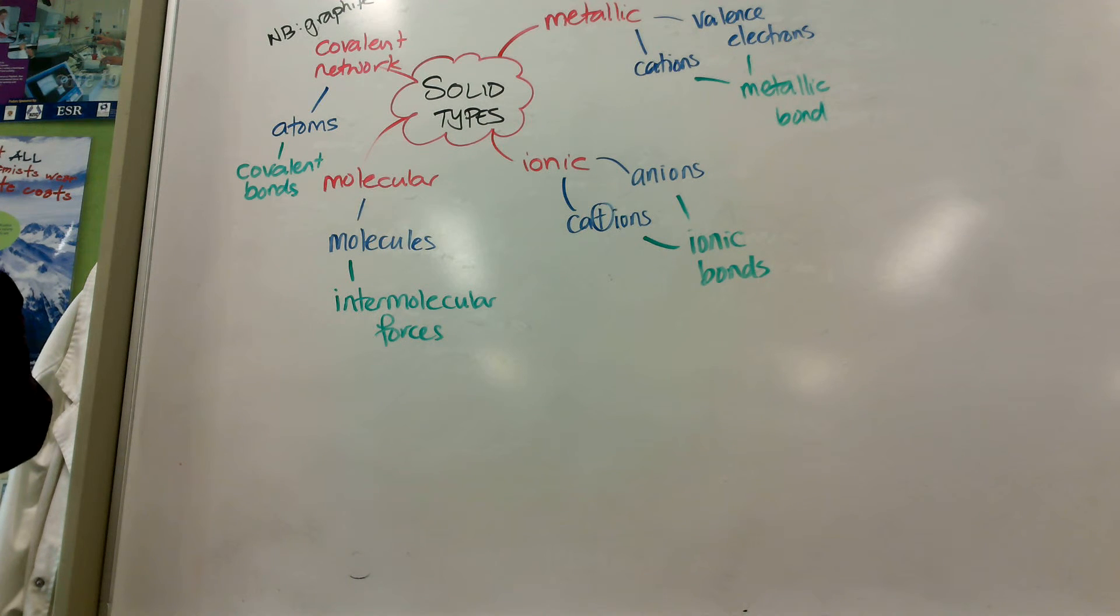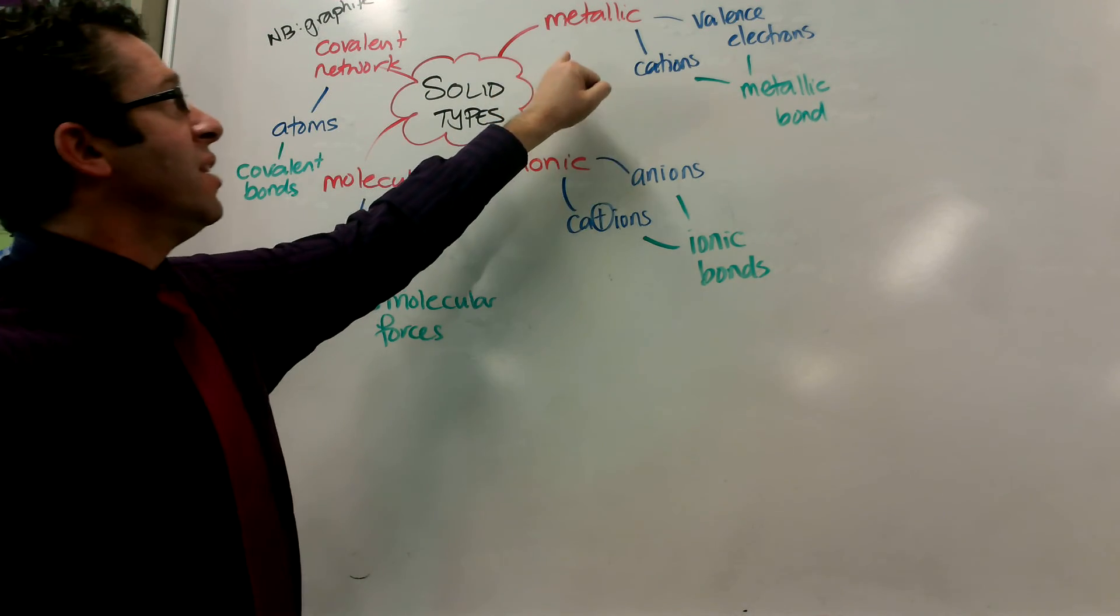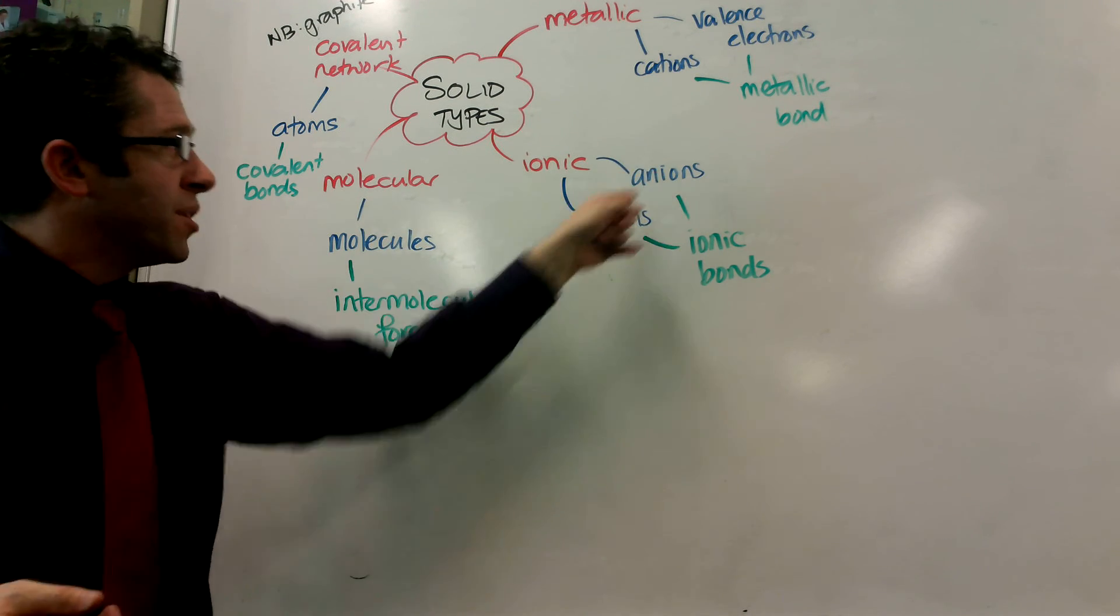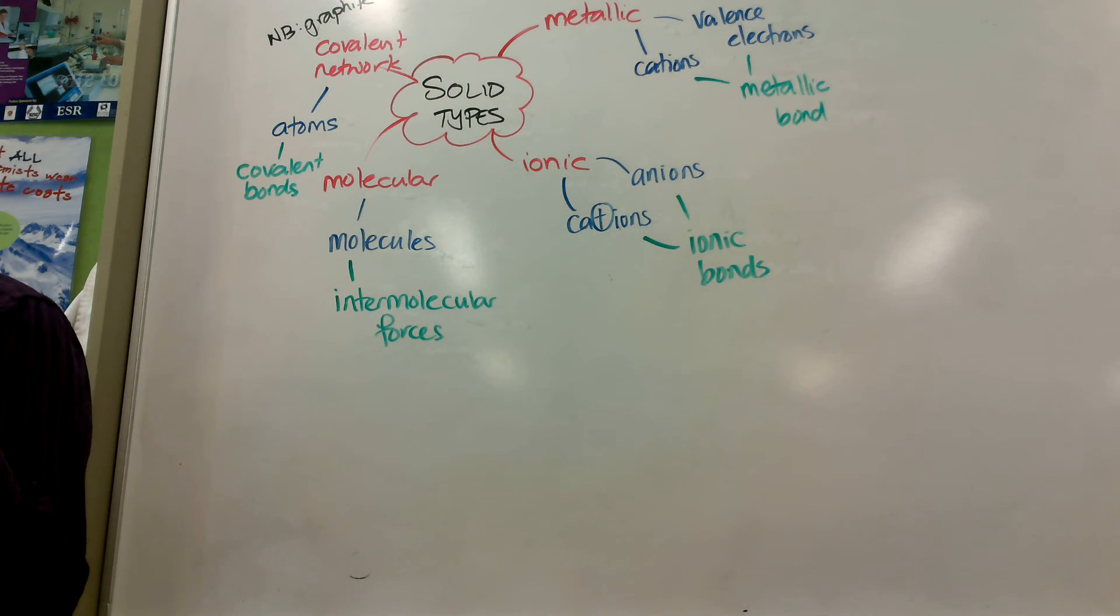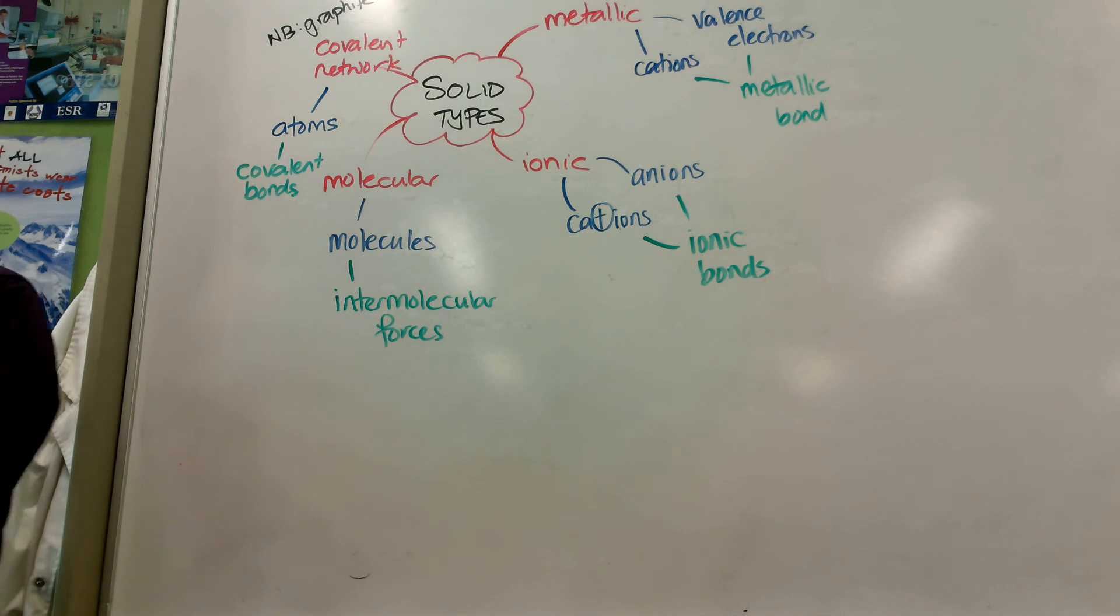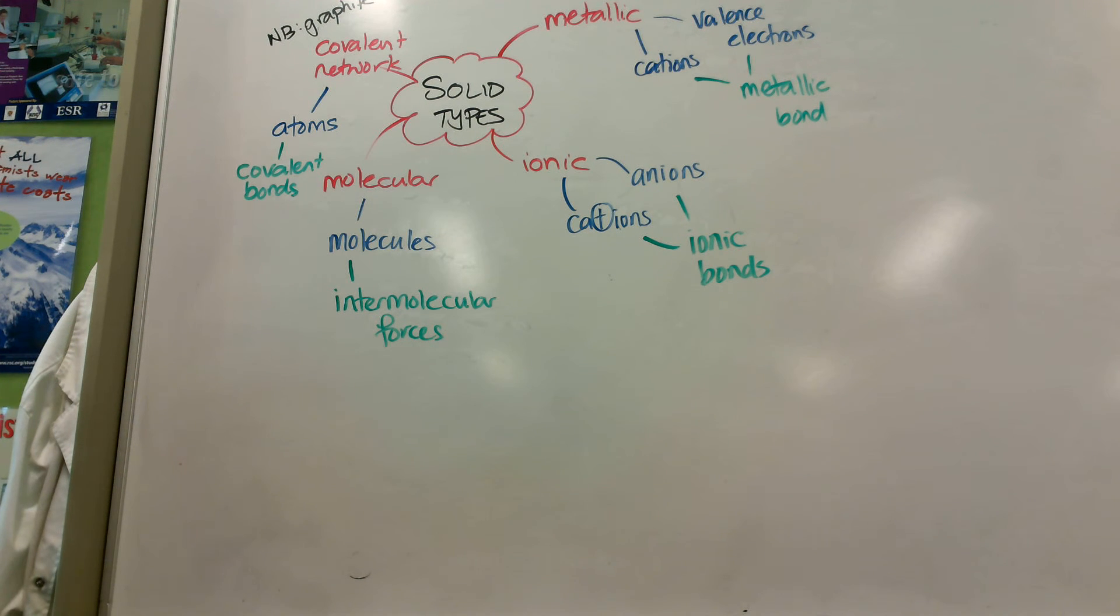Because each carbon's got three covalent bonds, the other electron goes into the sea in between. Anything else up there, though? Metallics. Metallics. So, why can these conduct electricity as a solid? Here we said that these couldn't because they were stuck in place. Because we call it a sea of valence electrons. Cool.